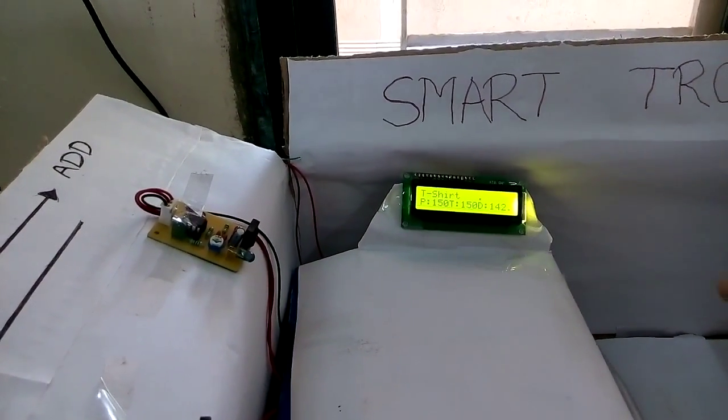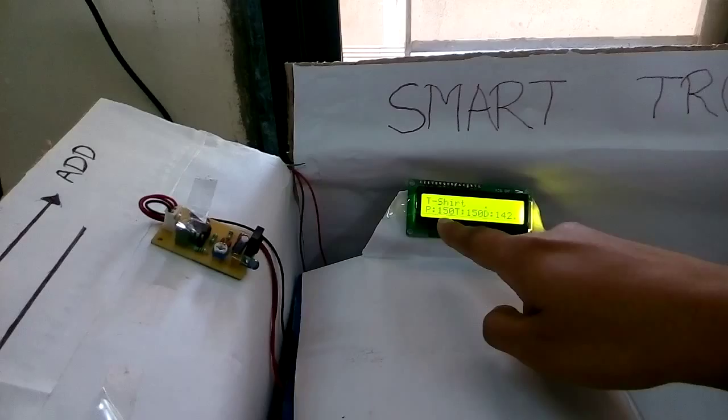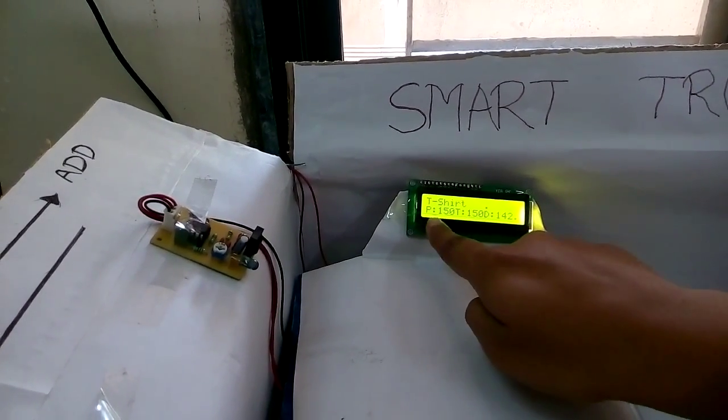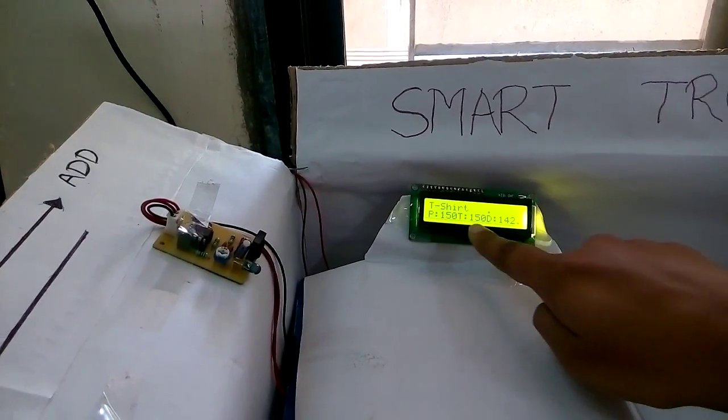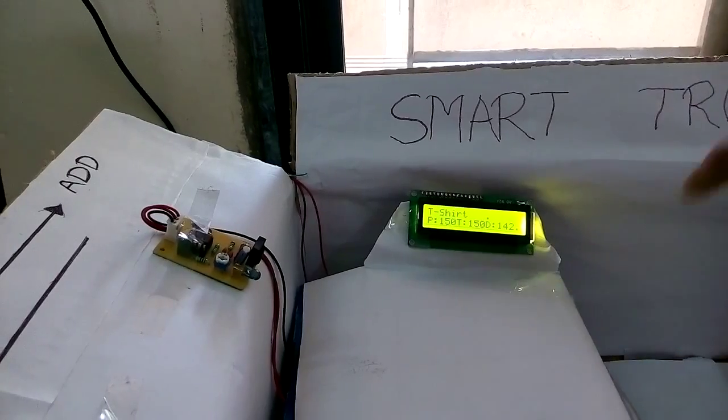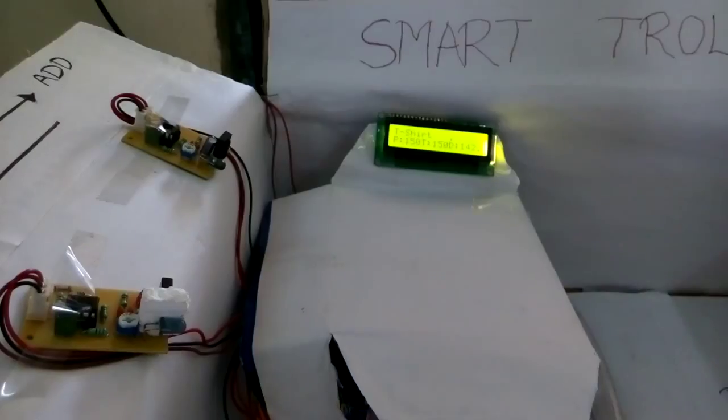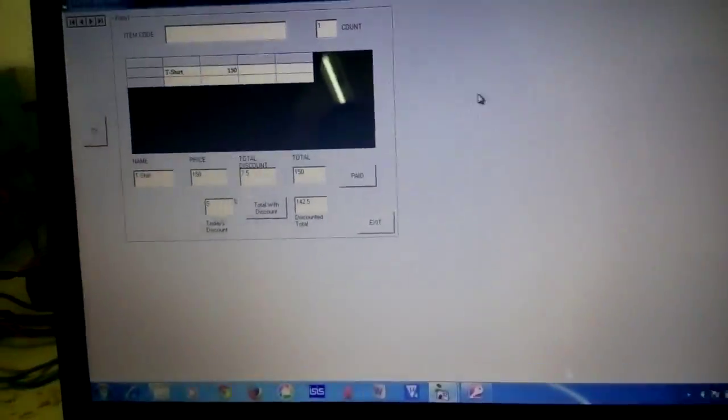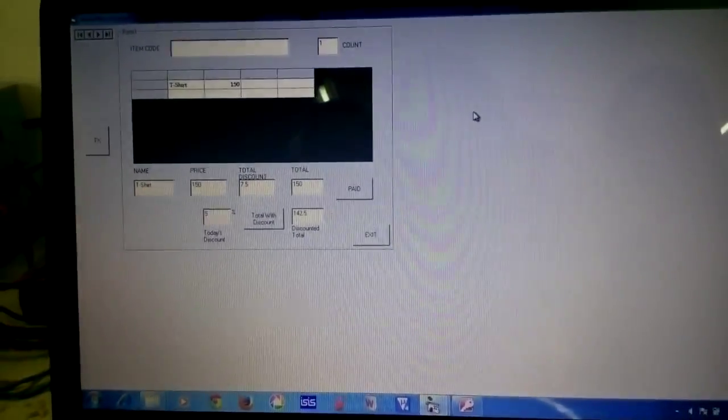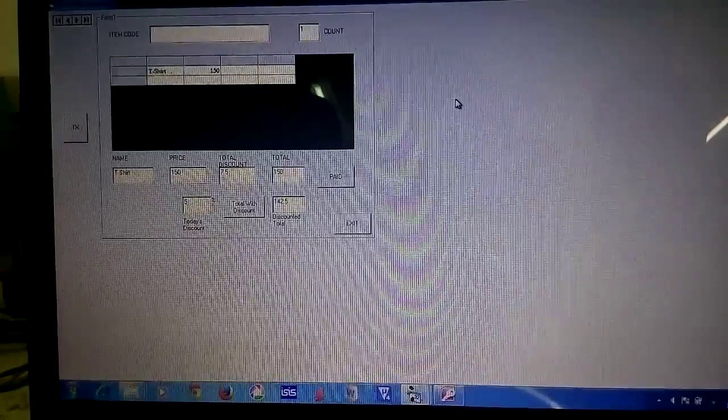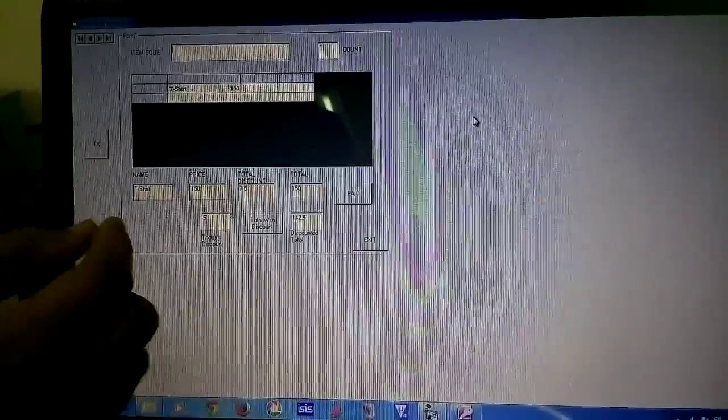Here the items displayed are the name of the product, price of the current item, total price and discounted price. On the Visual Basic, at the PC side we can see the details of the product scanned and we can see the list of the products here.